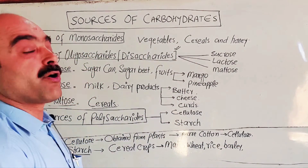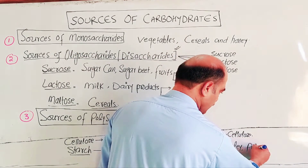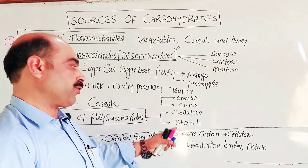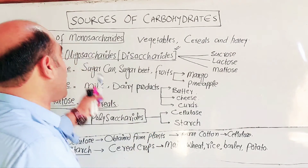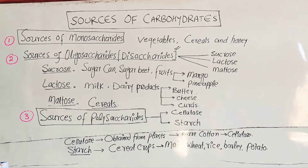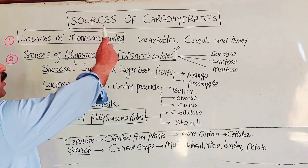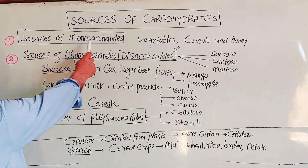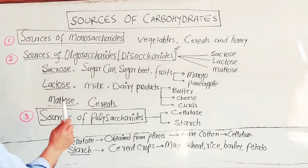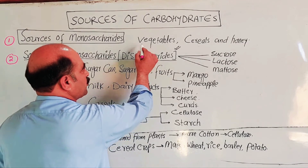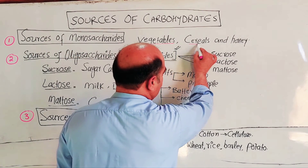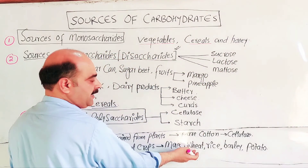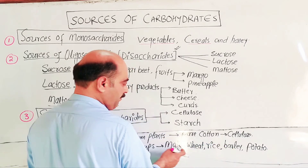Sweet potato is also a main source of carbohydrates. The overall main sources of carbohydrates include cereals, vegetables, grains, rice, barley, and beans.